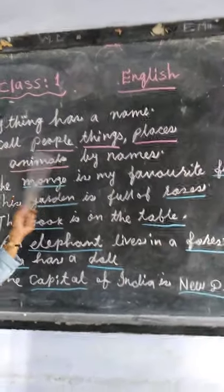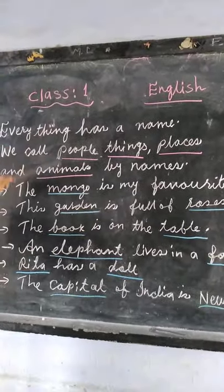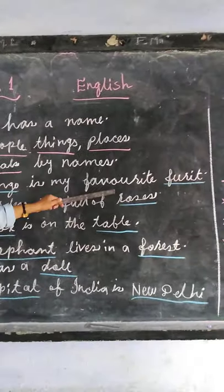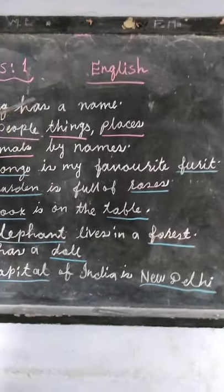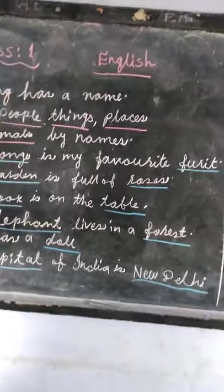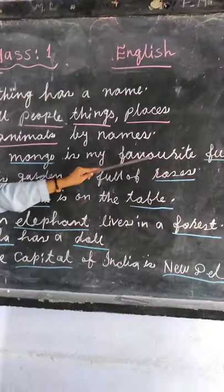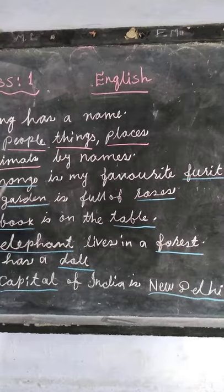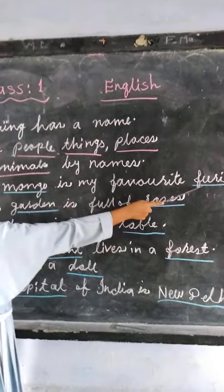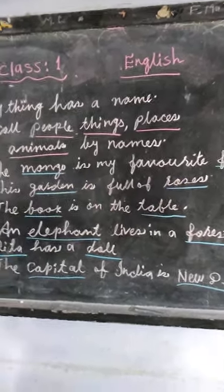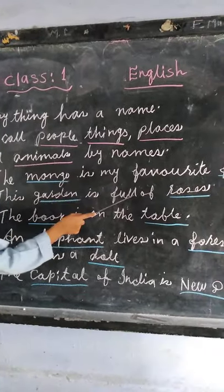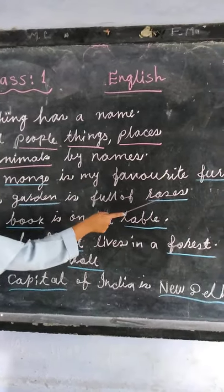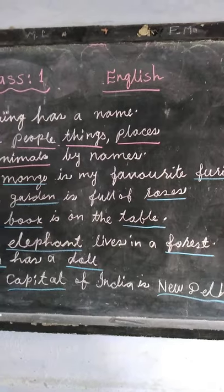This definition is very important. Number 1: The maimbo is my favorite fruit. You can understand this definition through examples. Maimbo is a naming word. Fruit is another naming word. Number 2: This garden is full of roses. Garden is a naming word. Roses is another naming word.